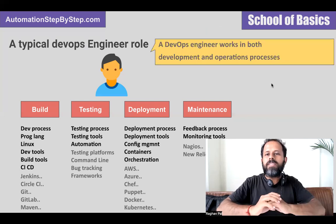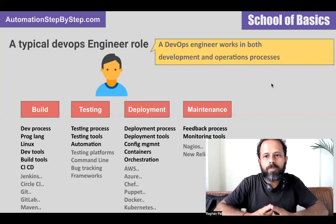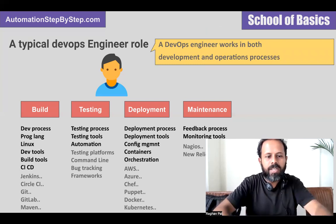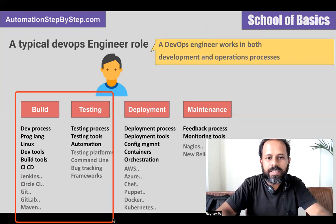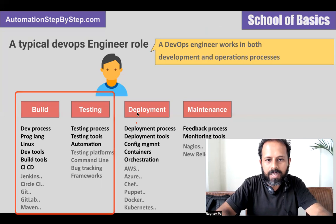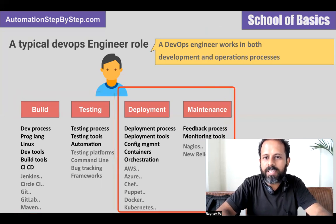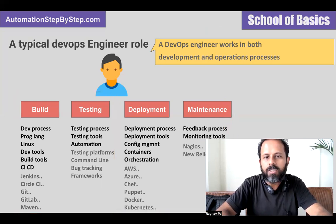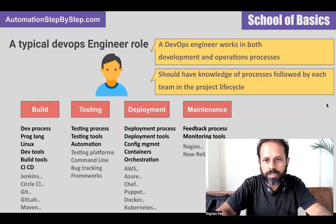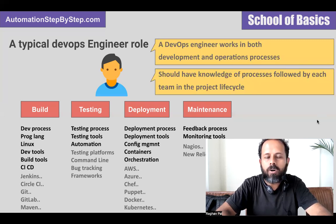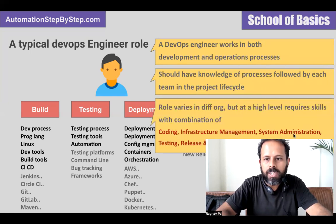A DevOps engineer works in both development and operation processes. Building and testing come under the development part, while deployment and monitoring and maintenance come under the operation part. A DevOps engineer should have knowledge of the processes followed by each team and each stage, along with the tools used.